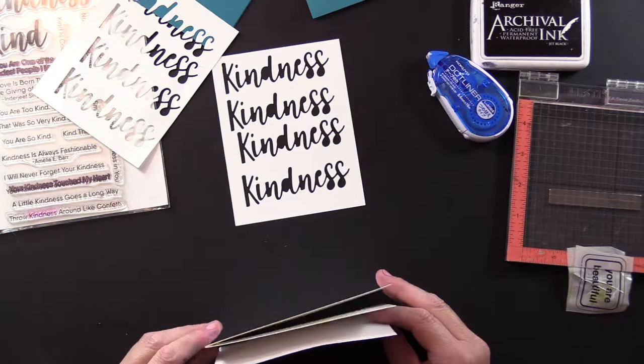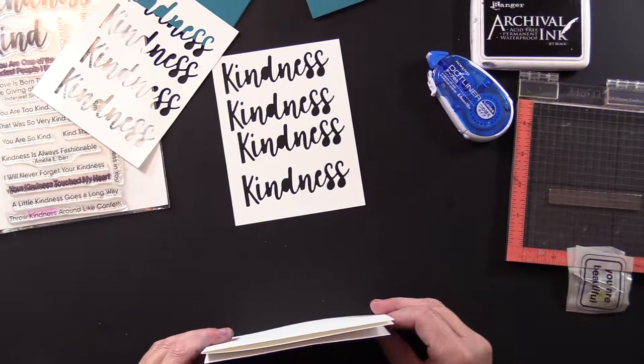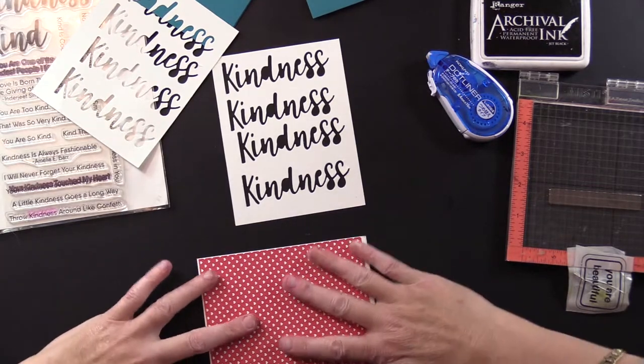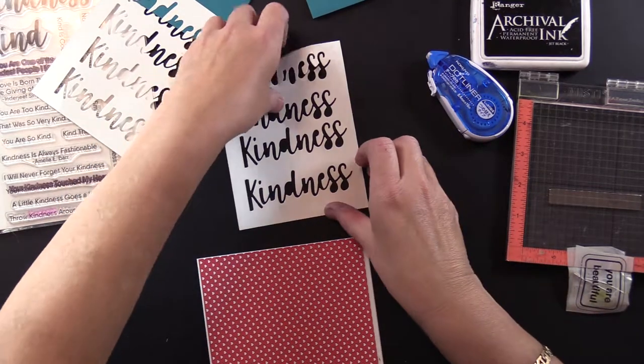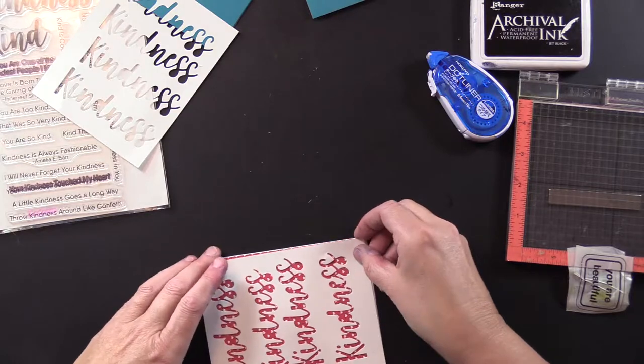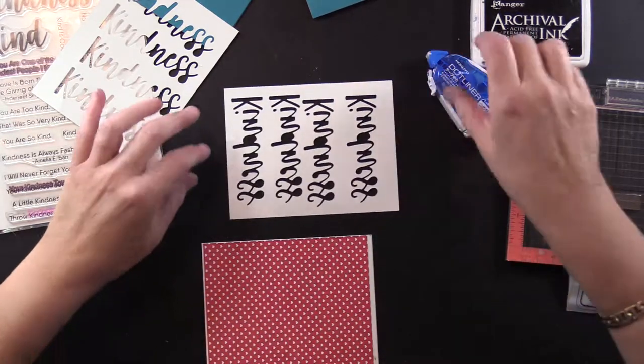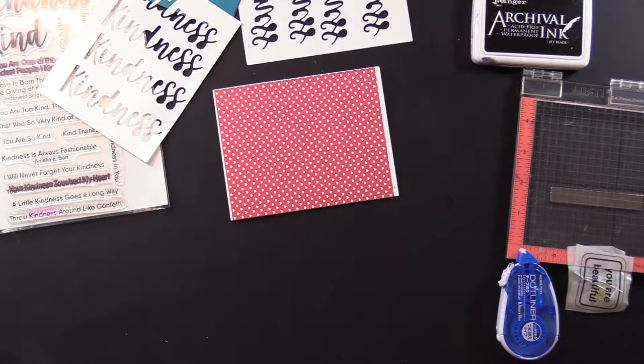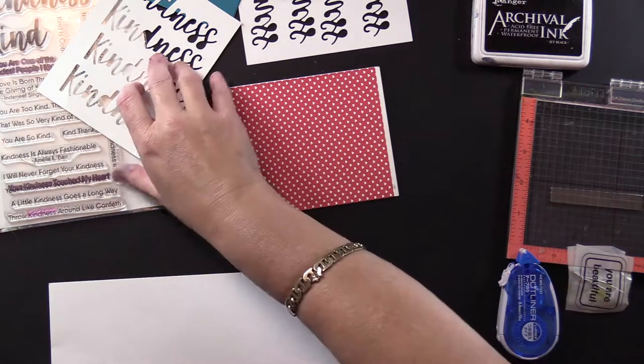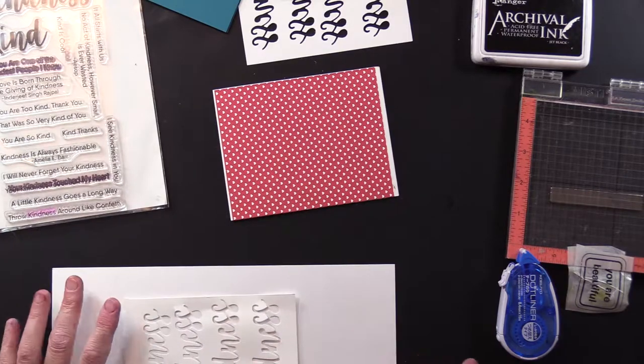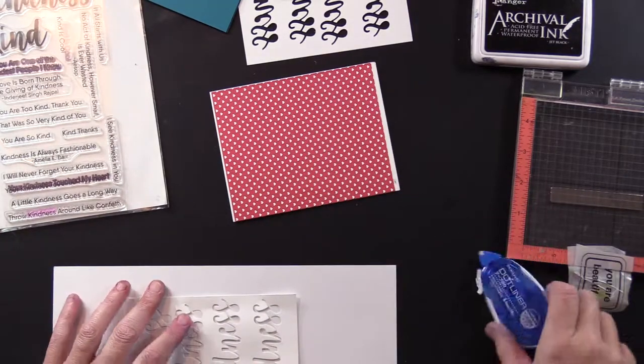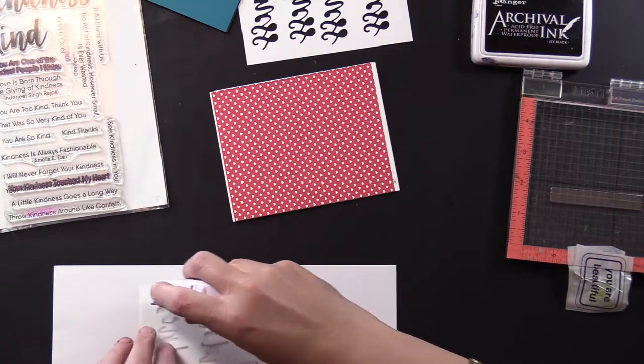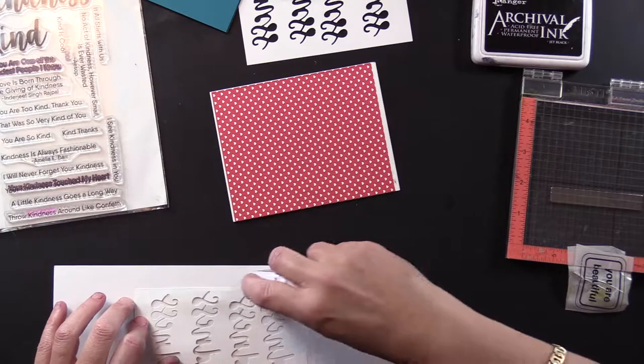Now I gotta make sure my little hearts are going the right way because I am notorious for putting things upside down. Now this does not have to be perfect on here because the kindness is gonna go on top. So right now, let me get a piece of cardstock to tape on because I don't get tape on this. I just scrubbed it really well for y'all, I don't want to get tape on it again.